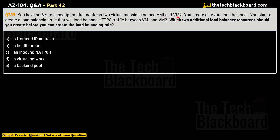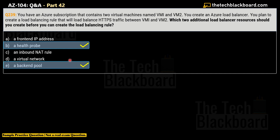Question 239: You have an Azure subscription with two virtual machines, VM1 and VM2. You create an Azure load balancer and plan to create a load balancing rule to load balance HTTPS traffic between VM1 and VM2. Which two additional load balancer resources should you create before creating the load balancing rule? Options are: A) a frontend IP address, B) a health probe, C) an inbound NAT rule, D) a virtual network, and E) a backend pool. The correct answers are B — health probe — and E — backend pool.